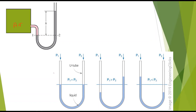Consider figure one: both ends of the U-tube are open to atmosphere — left limb and right limb — so the liquid level in both limbs will be the same. The pressure acting at the bottom of the left limb equals the pressure acting at the bottom of the right limb, giving a common level.